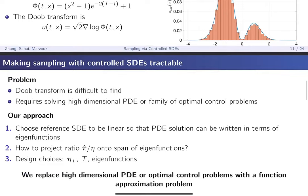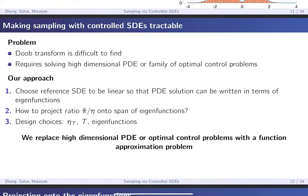So this works for a very simple example. How does it work for a more complicated one? To recap, the Doob transform is very difficult to find — it basically requires solving a very high-dimensional PDE or a family of optimal control problems. Our approach is to choose a linear reference SDE so that the PDE solution can be written in terms of eigenfunctions. But this naturally leads to questions: how do you project the density ratio onto the eigenfunctions? How do you choose ηₜ? How do you choose T? These are all open questions we'll discuss briefly.